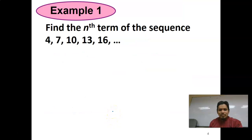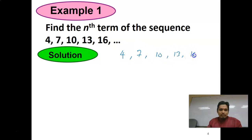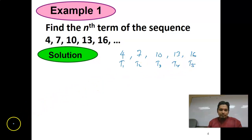Find the nth term of the sequence. In Example 1 we have 4, 7, 10, 13, and 16. We call these the first term, second term, third term, fourth term, and fifth term.